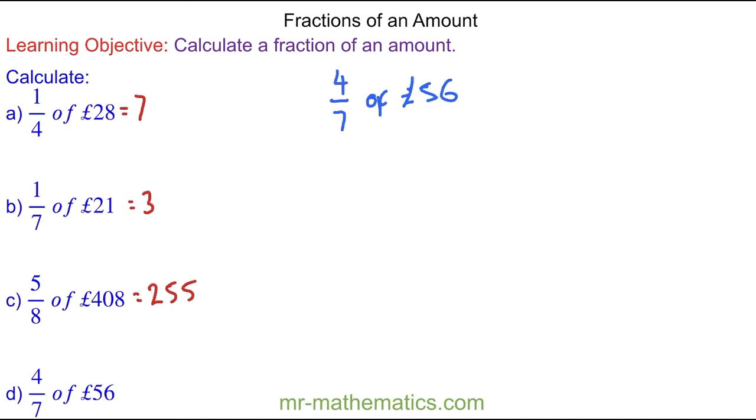So to work out four sevenths, we're going to work out one seventh and then we'll multiply that answer by four. So one seventh will be 56 divided by seven, which is eight.